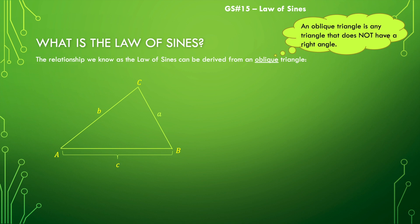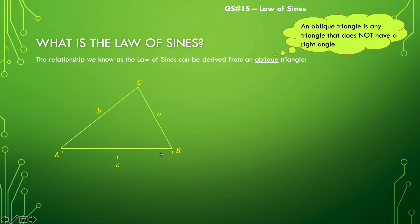So in this oblique triangle, before we do anything else, I want to remind you of a couple of things. Notice that my side lengths are labeled A, B, and C, and my vertices are labeled A, B, and C as well. If you are observant, you will notice that the vertex opposite a side length has the same letter — just one is capital and one is lowercase. That is true for all three of our side and vertex pairs, and that is convention. Even if it is not labeled that way, you can make that assumption.